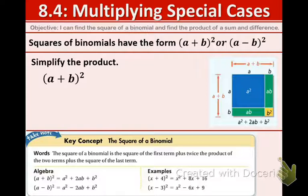Squares of binomials have the form of (a + b)² or (a - b)². I'm going to show you how to simplify this product, (a + b)². The picture, the area model, is shown at right.